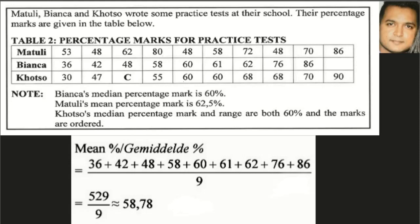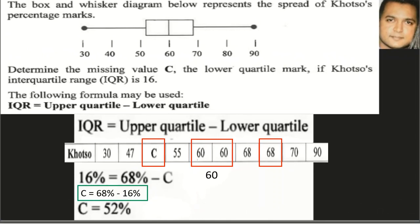Adding up all Bianca's marks and dividing by nine, we arrive at 58.78. Using the formula and substituting, I've presented Kotso's marks to determine the interquartile range. In the center we have the median of 60 after arranging the marks from highest to lowest. The upper quartile is 68 — shown in the red box — and C is the lower quartile, currently unknown. To find the interquartile range, we subtract C from 68.